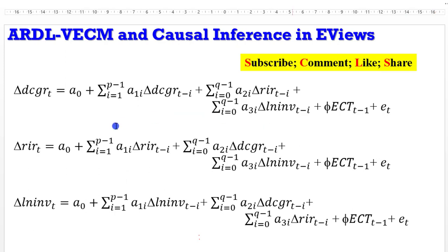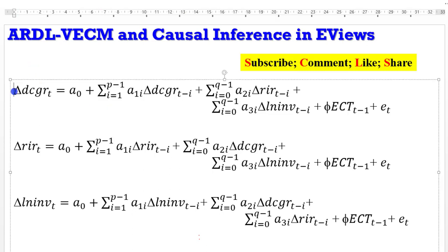For consistency, I'm using the same variables I used in the video when I talked about short run causal effects. So I'm maintaining domestic credit growth, real interest rates, and the log of investments in a three-variable ARDL VECM framework. As you can see on the screen, each variable is a dependent variable in its own ECM equation — the equation for domestic credit growth, the one for real interest rate, and the equation for the log of investments — all specified in the error correction model form.